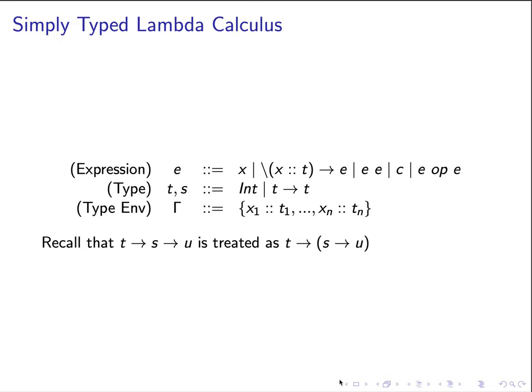Simply typed lambda calculus is an extension to the lambda calculus we've seen in the last lesson. The only difference is that in the lambda abstractions, the formal argument variable has to be annotated with some type. So the annotation has to be provided by the programmers.